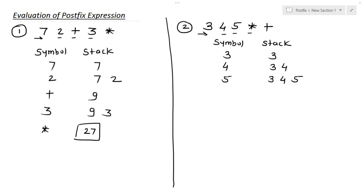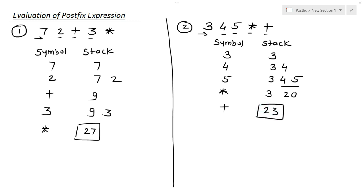The next symbol is multiplication. At the top of the stack are 4 and 5, so we multiply 4 and 5. The answer is 20; in the stack we now have 3 and 20. The next symbol is the last one — plus. We have only two operands left, 3 and 20, so we add them. The answer is 23. This is our final result.